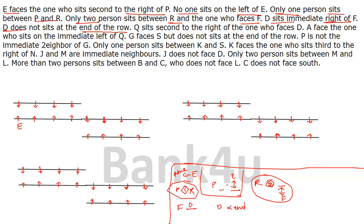Let's try the first possibility with E placed here. E's opposite person is second to the right of P, so P is placed accordingly. Between P and R there is a gap of one person, so R is placed. Then R and the person facing F have a gap of two — that person faces F, so F is placed, and D goes immediately to F's right. D is not at the extreme end — this checks out. First possibility is valid.